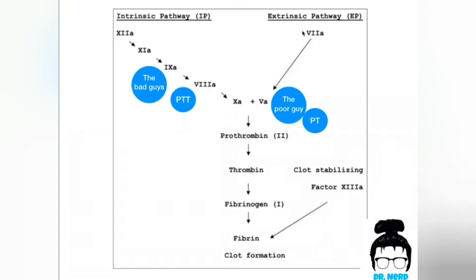The extrinsic pathway has only one factor, which is 7. A way to differentiate between them is by remembering that the intrinsic pathway has the highest numbers — all the factors in the intrinsic pathway are higher than 7, the factor involved in the extrinsic pathway. So 12, 11, 9, and 8 are all higher than 7. These are the biggest brothers, and that's why they are intrinsic, while the tiny little one, 7, is out — extrinsic. He exited the family.